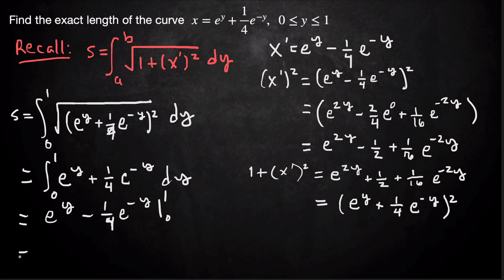Plug in those bounds to get e - (1/4)e^(-1), which is plus the evaluation at 0. And of course, I can simplify that last two terms. -1 + 1/4 is going to be -3/4.